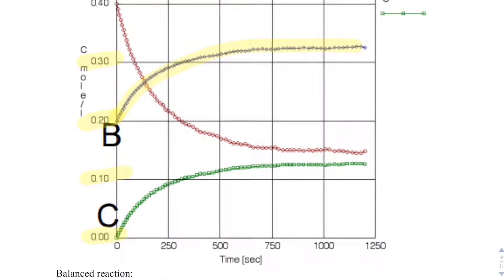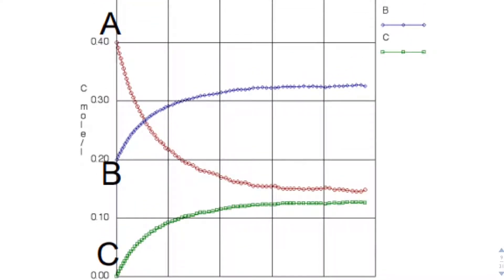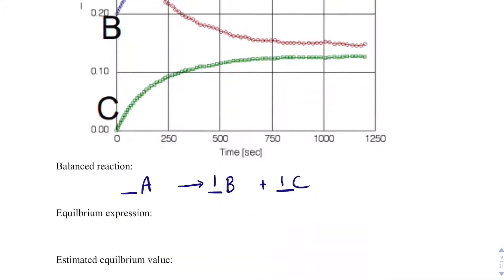Now if I look at A, A decreases and it starts at 0.4 and goes down to about maybe 0.15. And so that is about double the amount of change, so A would be 2.